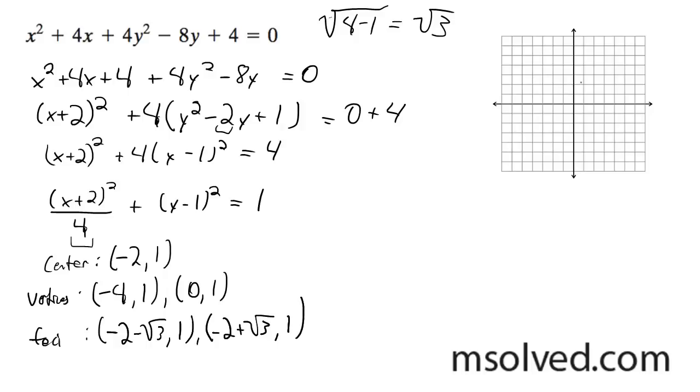So we can go ahead and graph this. It's negative 2, 1 for our center, and then our vertices: negative 4, 1, and then 0, 1. And then for the minor, it's just going to be 1. And then negative 2 minus root 3, which root 3 is approximately 1.7, so right about there and right about there. And that's it.